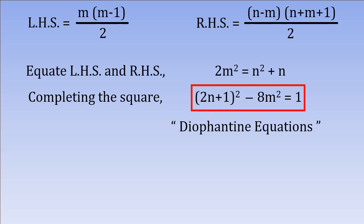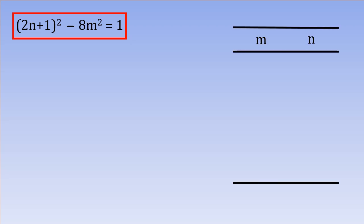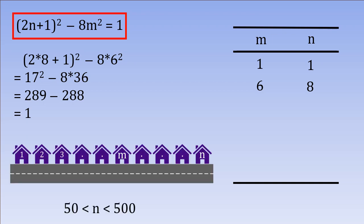Now, if we look for integer solutions to our equation, we soon see some solutions are easy to find. M and n both equals 1 is a solution. If we persist, another solution, M equals 6 and n equals 8 can be found as well. However, these are not our answer yet as n should be between 50 and 500 as the puzzle requires.